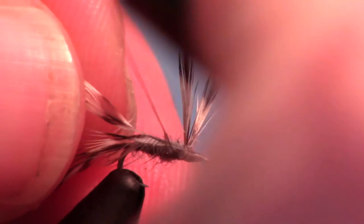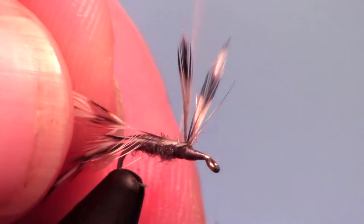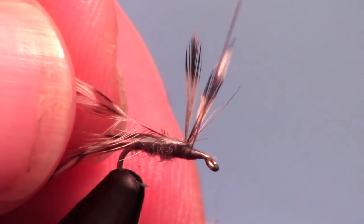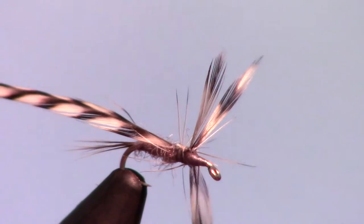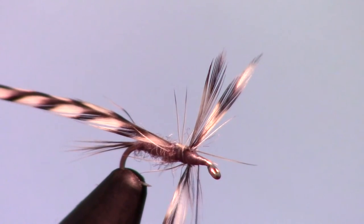Rinse and repeat for another hackle and tie it in the same way. Make two or three wraps behind the wings, then two in front of the wings.